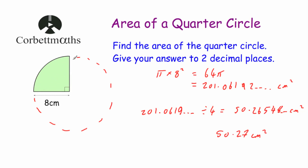So to find the area of a quarter circle, you find the area of the whole circle and then just divide it by four. Okay, let's have a look at our next question.